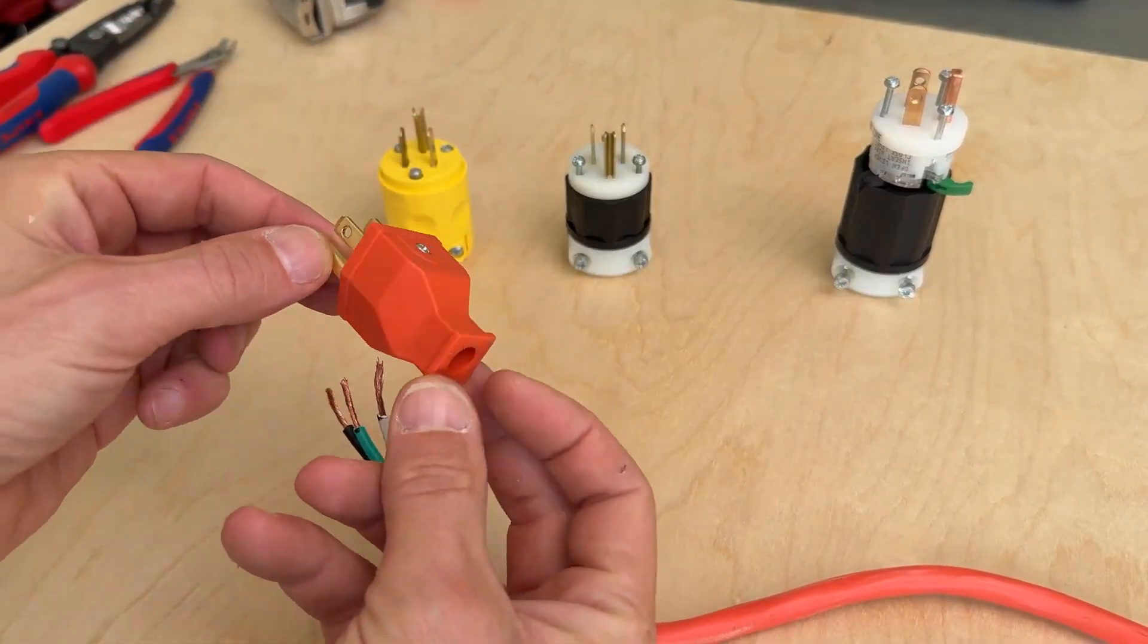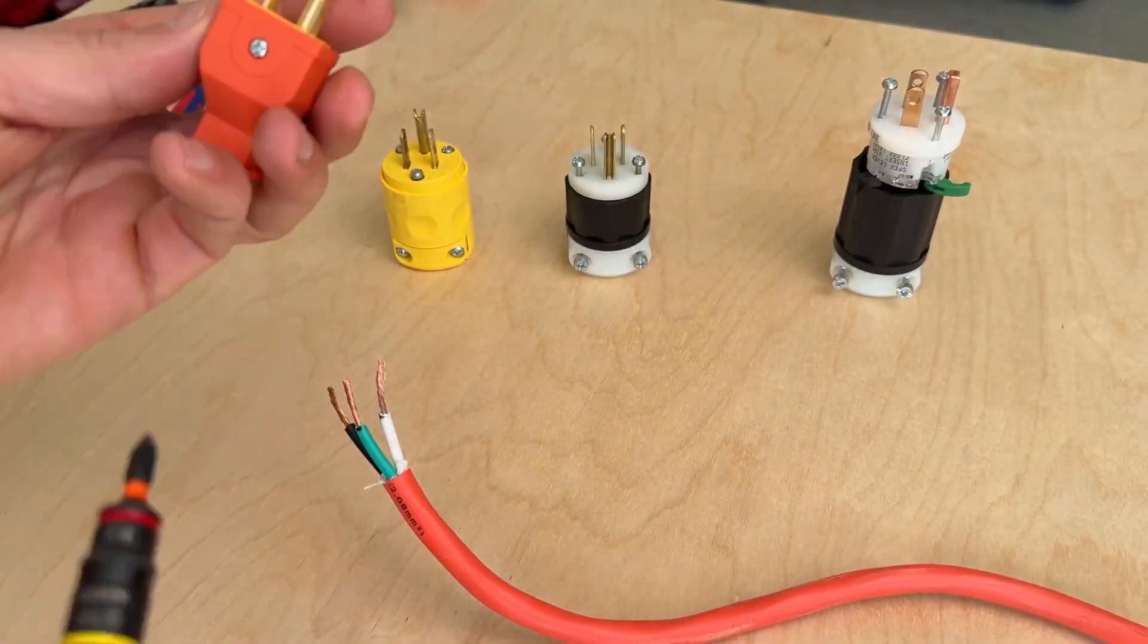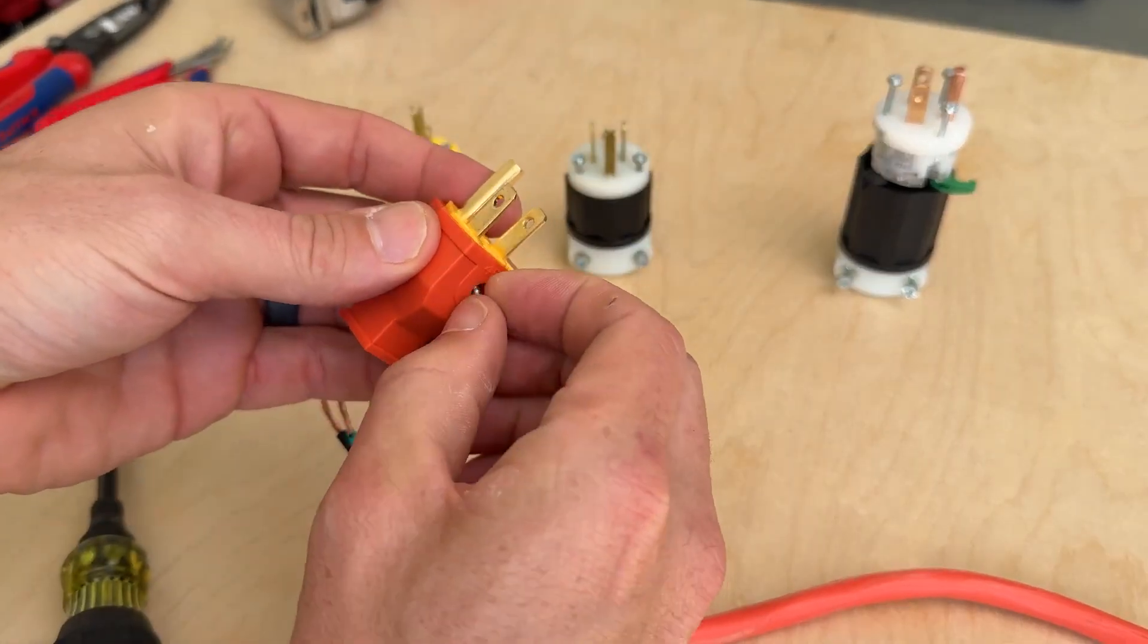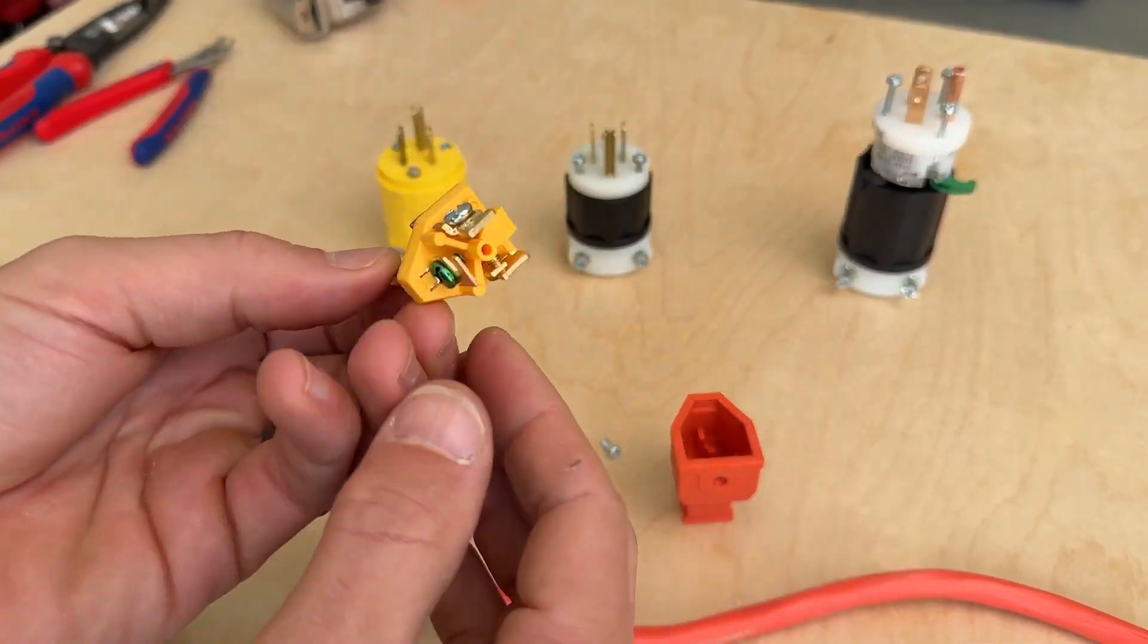So first up, we're going to go with this cheap-looking orange one from Lowe's. It's about four dollars and just has a single screw here that will undo with a Phillips head bit, and I'll separate the orange housing from the yellow plug.